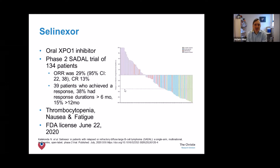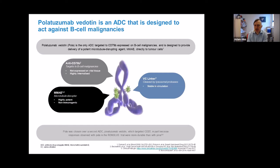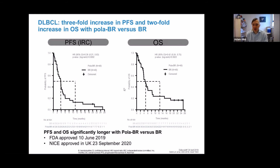Selinexor is a tablet licensed in the US in the last year. The trial saw 29 percent of patients respond, with 13 percent achieving complete response — somewhat underwhelming in my opinion, though the FDA has licensed it for relapsed DLBCL. Of more interest to UK patients is polatuzumab vedotin, another antibody drug conjugate. A randomized trial of chemotherapy versus polatuzumab showed a survival and relapse advantage to receiving polatuzumab in relapse.